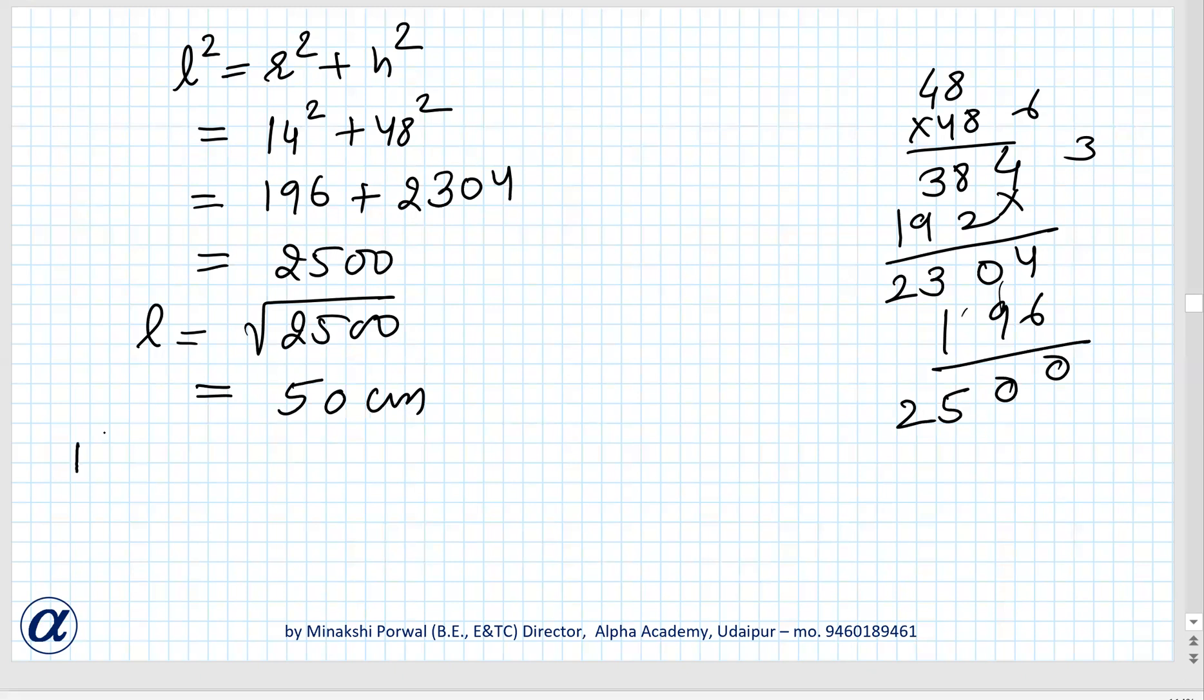Now third thing we have to find curved surface area. Curved surface area of a cone is π r l, that is 22/7. R is 14, l is 50. So 2 times.